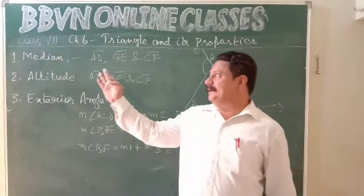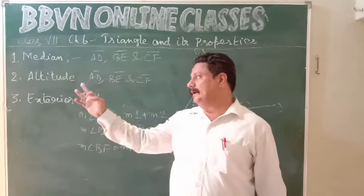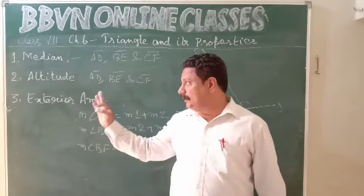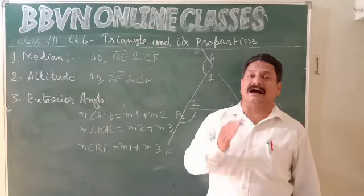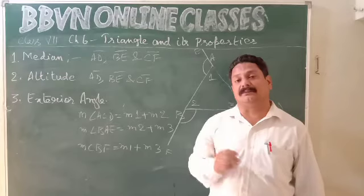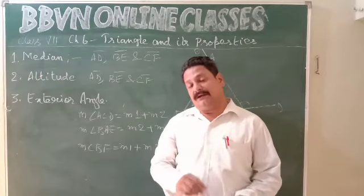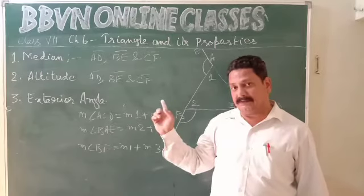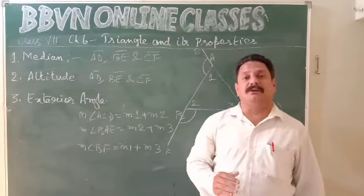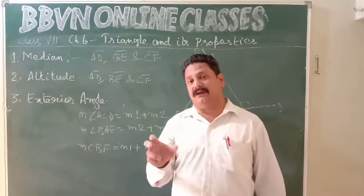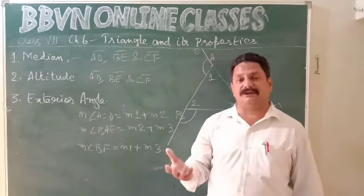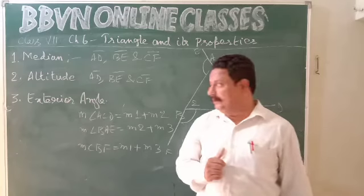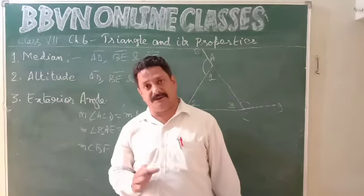So today we have studied the median of a triangle, the altitude of a triangle, and the exterior angle of a triangle — which is one of the properties of triangles. Tomorrow we shall discuss the angle sum property of the triangle: the sum of all interior angles. Please go through the content in your NCERT textbook, and if there is anything you can't understand, contact me for clarification. Develop the habit of reading from your textbook. Stay safe, stay healthy — we shall meet tomorrow.